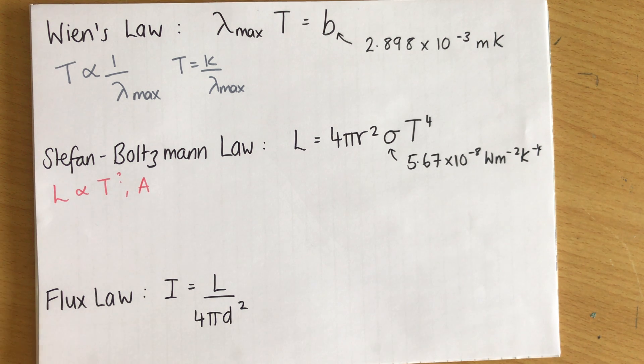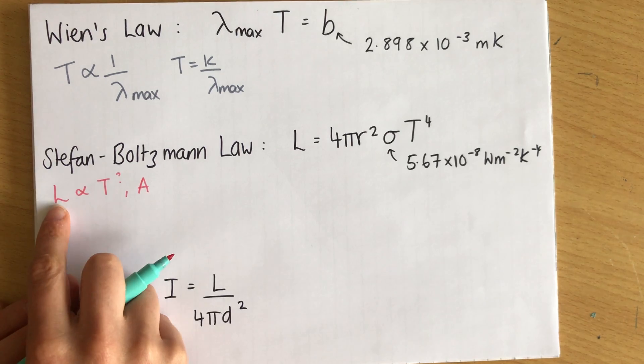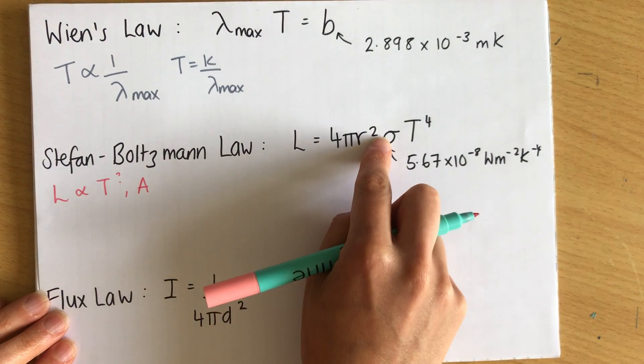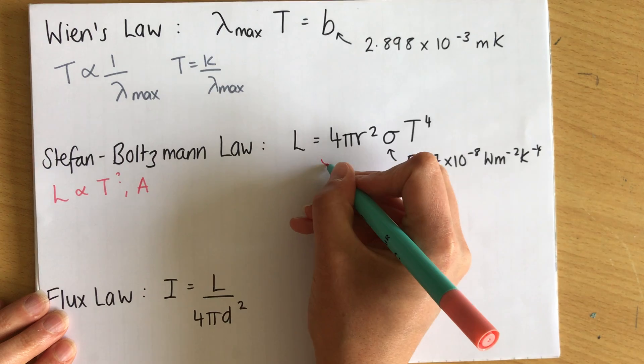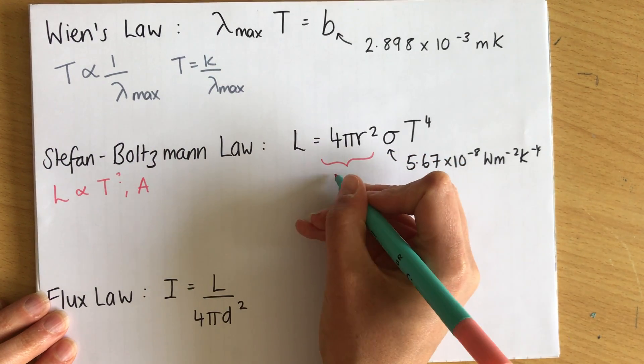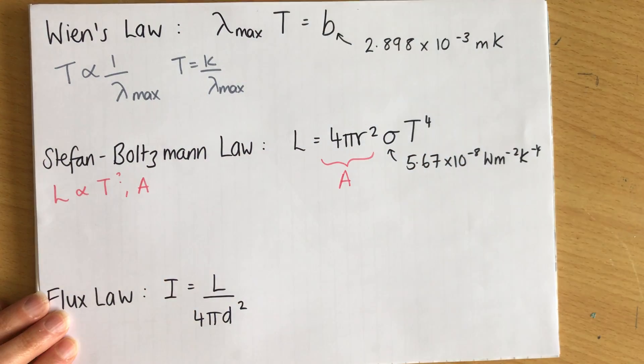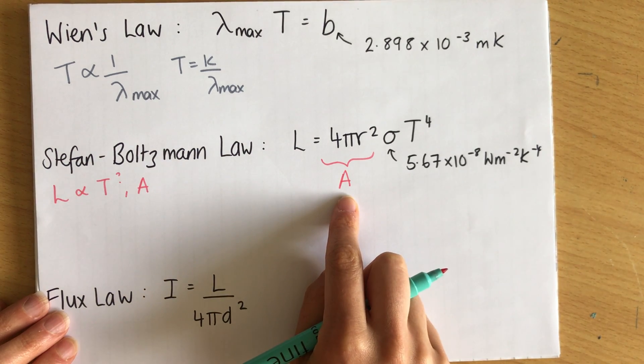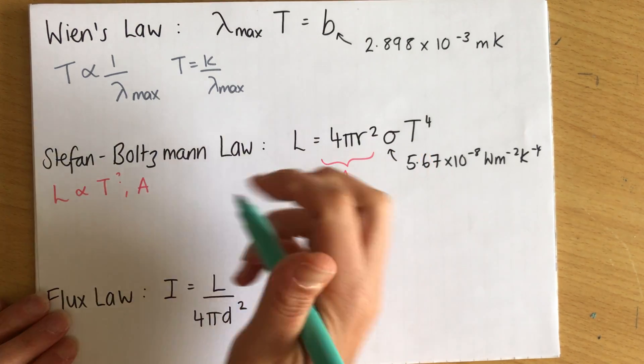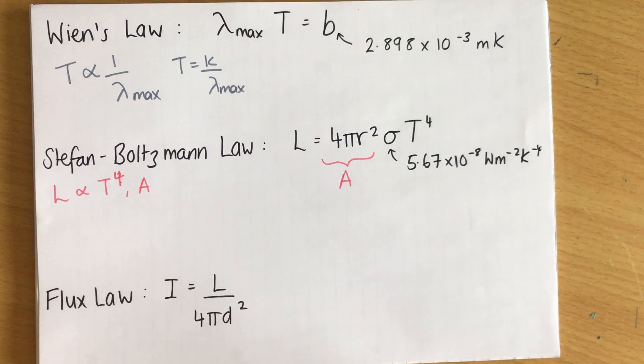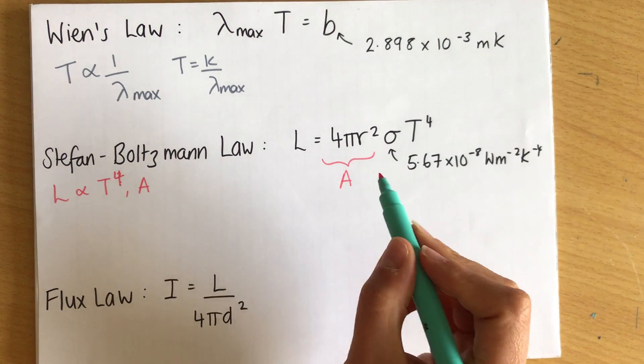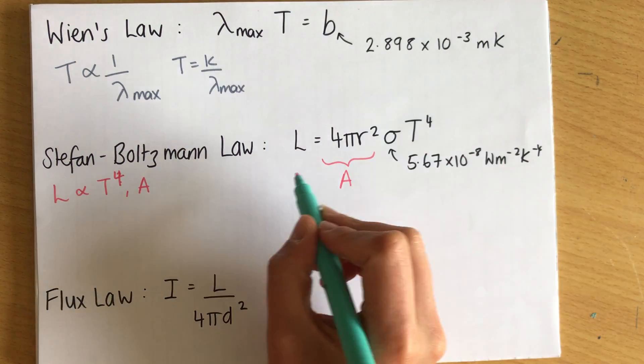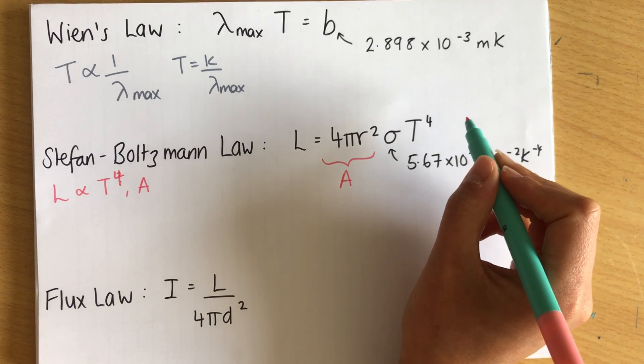And what Stefan Boltzmann did in their law is they linked this together. Luminosity is actually directly proportional to the area. Now this here is an area, this is the surface area of a sphere. And stars are spherical. So they've said that luminosity is proportional to the area, and it's proportional to T to the 4. And the idea of this T to the 4 comes from that area underneath the graph.